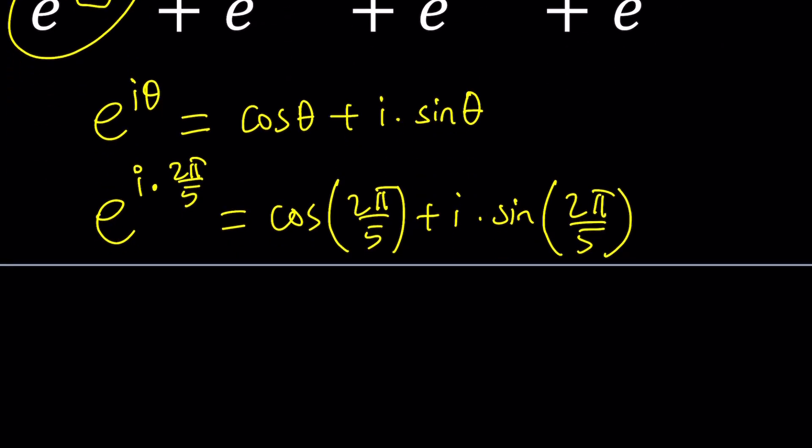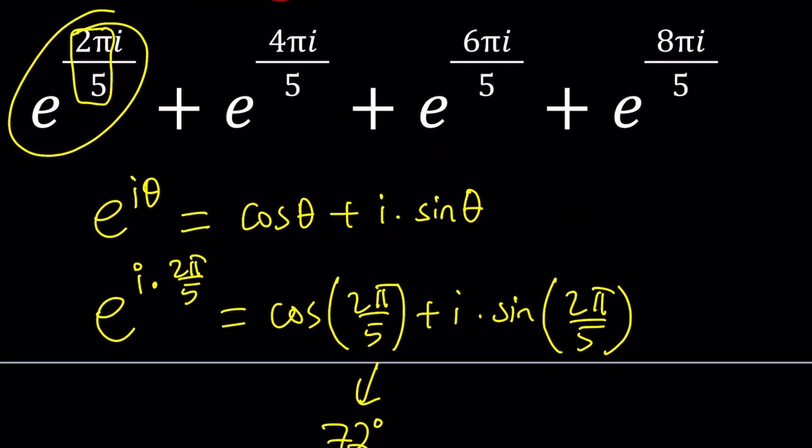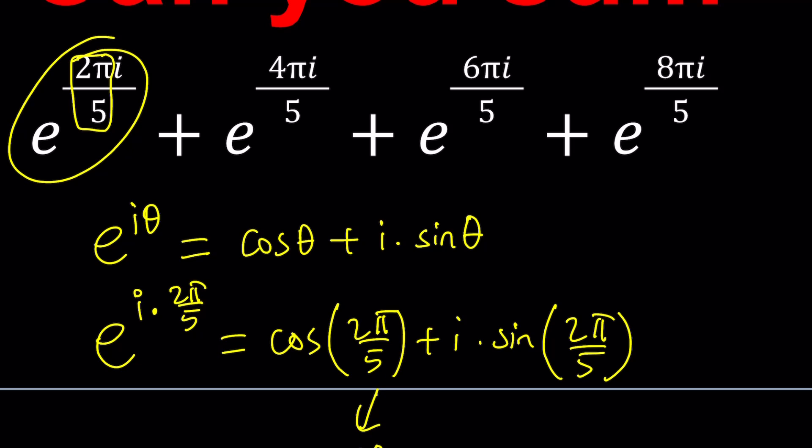Now, how do you find those values? What is 2π over 5? π over 5 is 36 degrees. And if you double that, you get 72 degrees. For those of you, including myself, that are more comfortable with degrees than radians, this would be 72 degrees. And then you're thinking about multiples of that number, like 144, 216, 288, and so forth. We're adding those numbers.